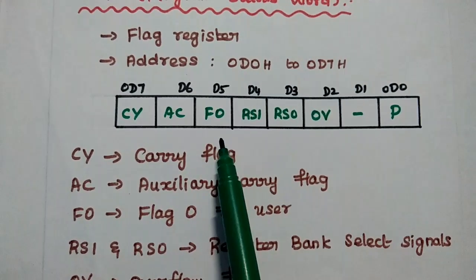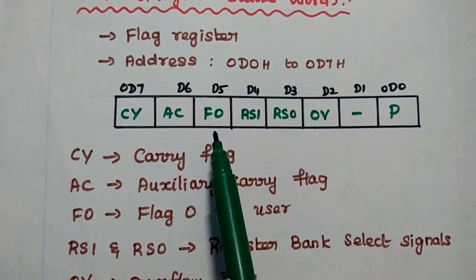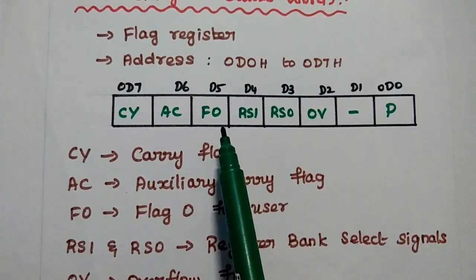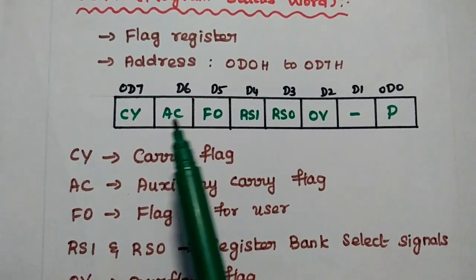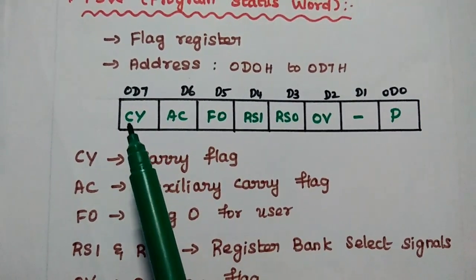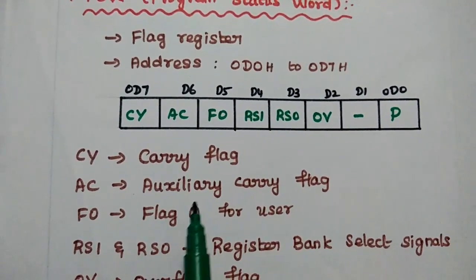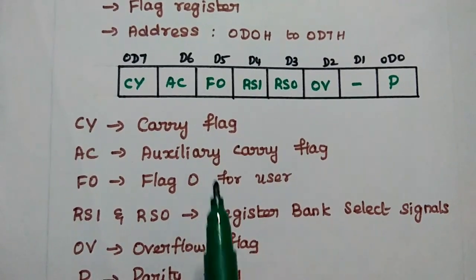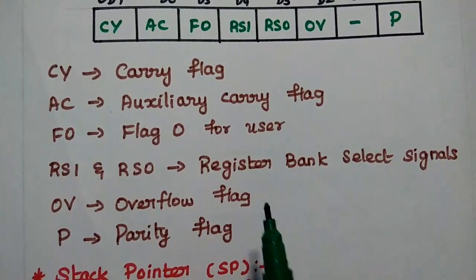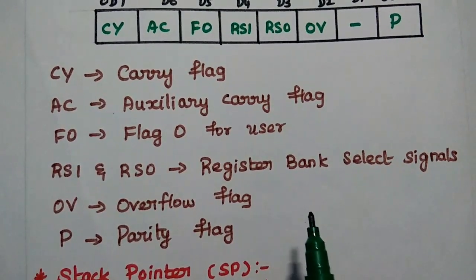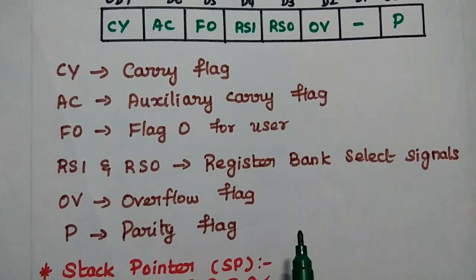The next flag is F0, that is flag 0, which can be defined by the user. The next one is the auxiliary carry flag, then the carry flag. These flags are very important in AT51 microcontroller, and the status can be updated by using the PSW register.